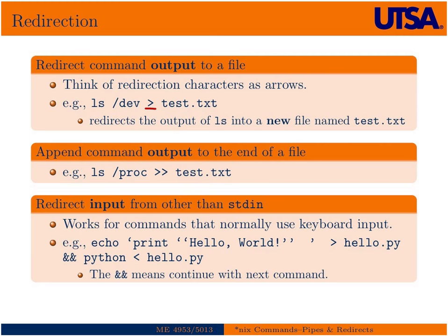Then we can also use this double redirect, which actually appends the output of the command, in this case ls /proc, into test.txt. So the single arrow will actually overwrite or create a new file there. The double arrow will append it to the end.